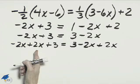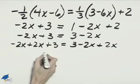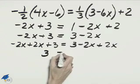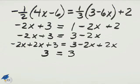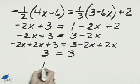On the left, negative 2x plus 2x is 0x, so all we have here is 3. And on the right, the same thing happens. We end up with 3 equals 3, which is always true. This is an identity, and the answer will be all real solutions.